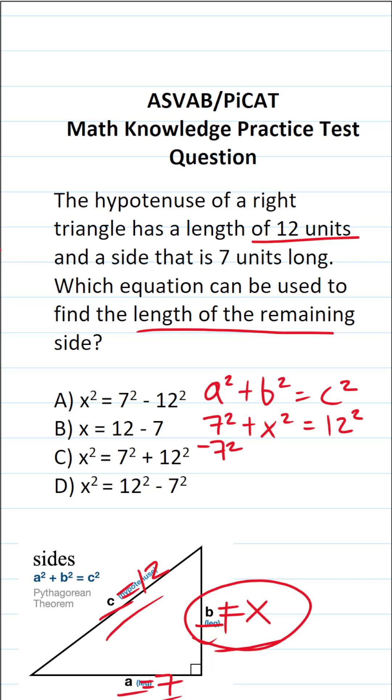What I'm going to do is subtract 7 squared from both sides of the equation. In doing so, this crosses out. This says X squared is equal to 12 squared minus 7 squared. And as you can see, we do not have to simplify this any further.